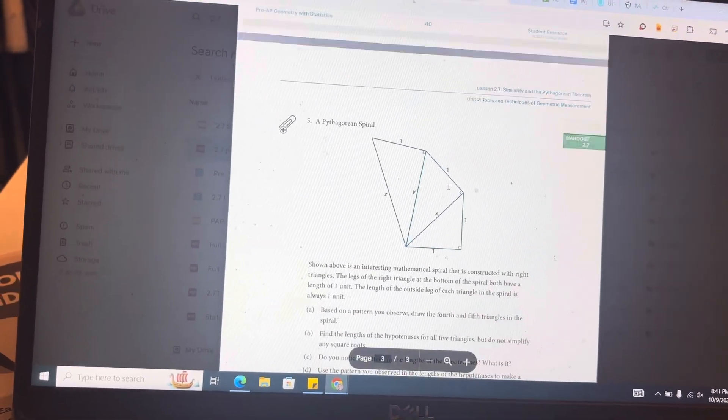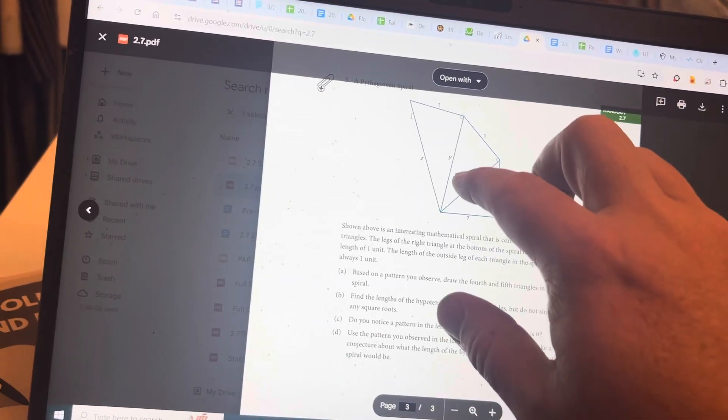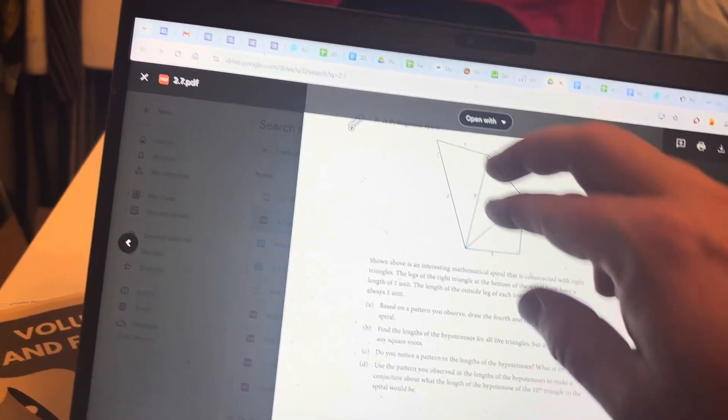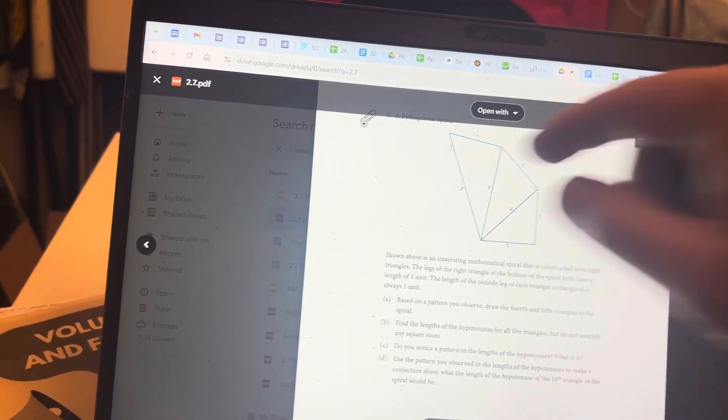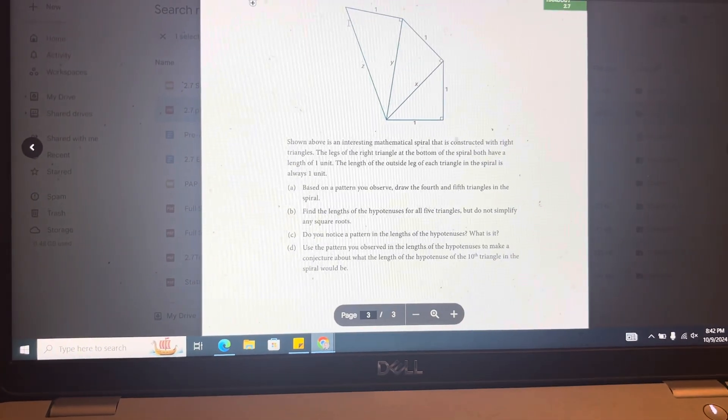And then, number five, the Pythagorean spiral. Just work the Pythagorean theorem. Use this and then the answer that you get here to use the next one. Use this information to get that answer for the next one. Figure out the pattern and answer the questions there. And have a great four-day weekend.